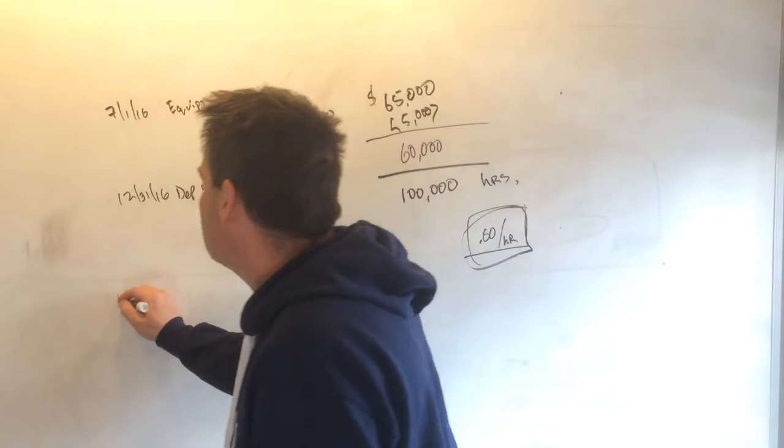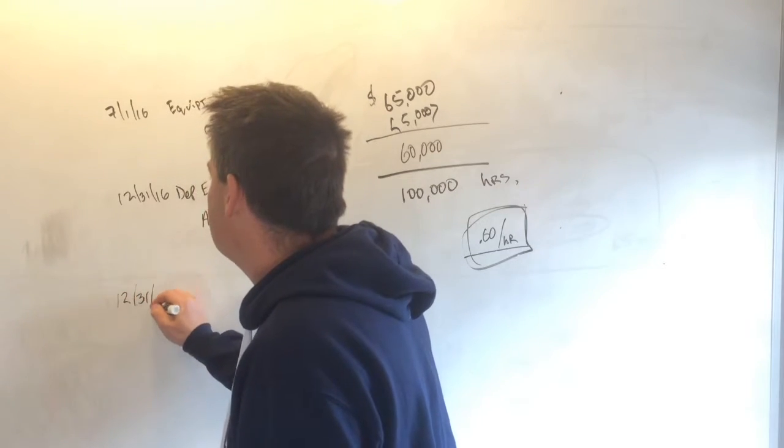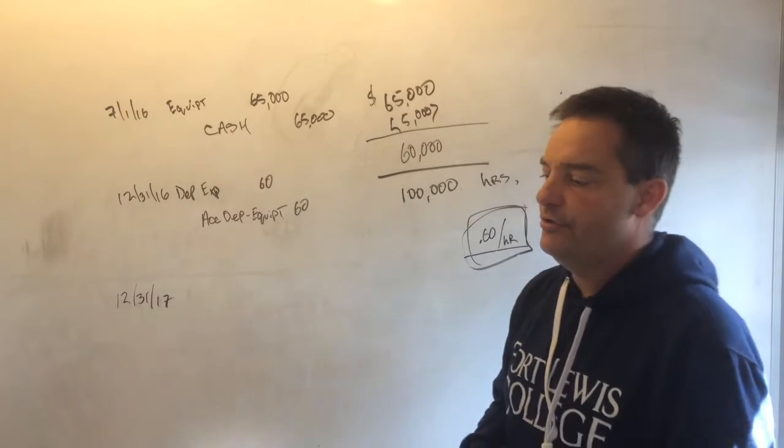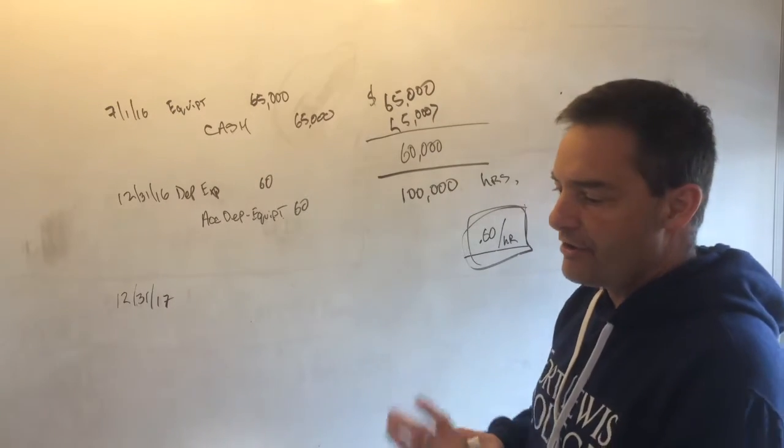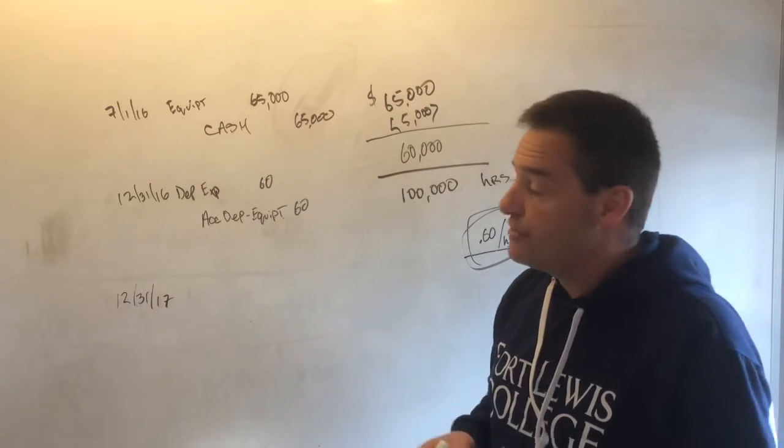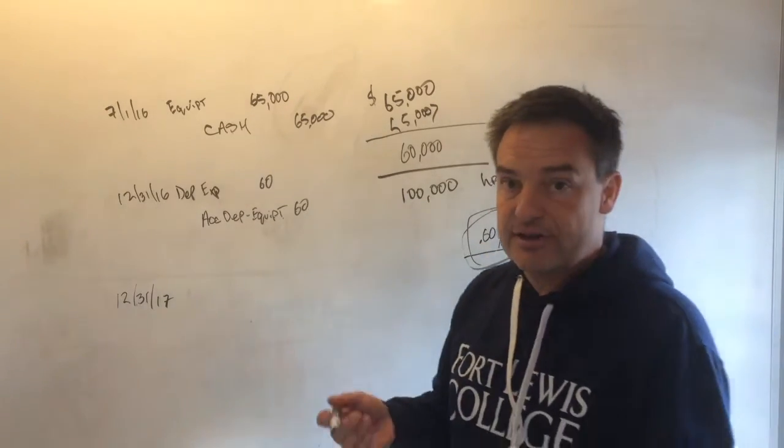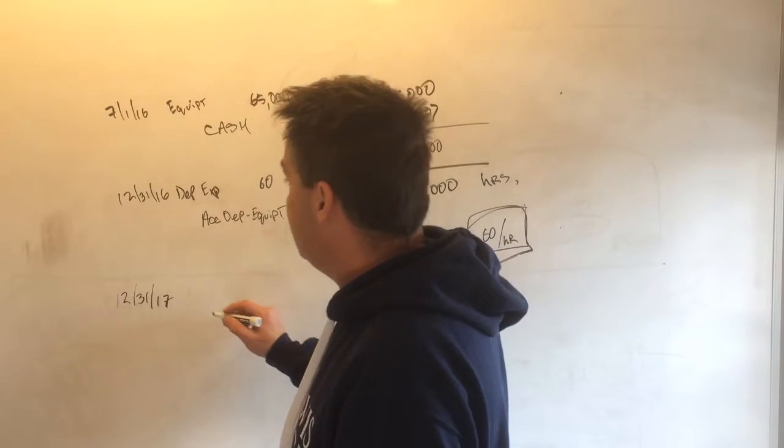End of year two, 12-31-2017, you'd run out there, you'd go and see it went from 100 hours to 300 hours on the meter, meaning you did 200 hours during 2017. So 200 hours times 60 cents an hour is $120.